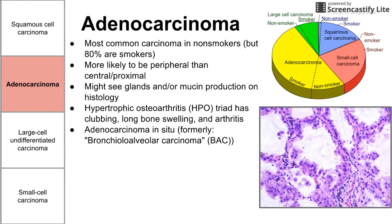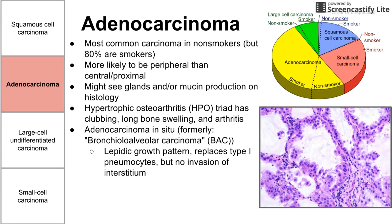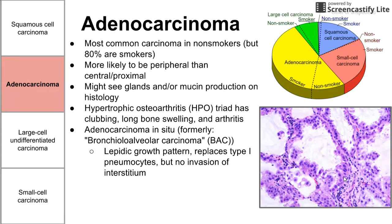A specific subtype of adenocarcinoma is called adenocarcinoma in situ. This one has some special features — it has a lepidic growth pattern. Lepidic means butterfly-like, very gentle. This is what you see in the bottom histology image here: the gentle replacement of the type 1 pneumocytes around the alveoli with the cancer cells. This means it's not invading the basement membrane or breaking into the interstitium. Rather, the adenocarcinoma is growing around the alveoli in a lepidic growth pattern — very characteristic of adenocarcinoma in situ.